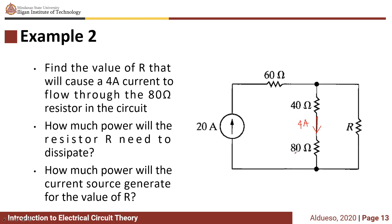We have 4 amperes here. So if the current flowing in this branch, which is the 20 ampere current source, is 20 amperes, and this branch is 40 amperes, what will be the current here in this branch? So it will be 20 minus 4 amperes, so 16 amperes.